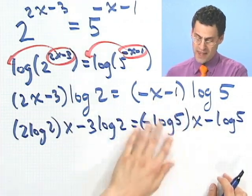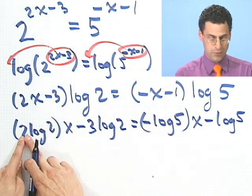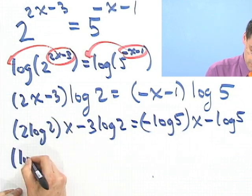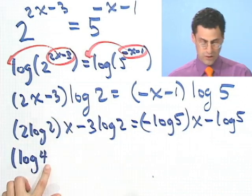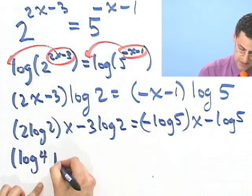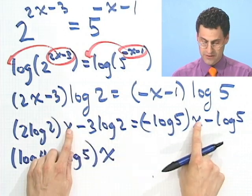What can I do now? Well, I can bring this stuff with x's over to this side, so it becomes a plus. This 2 out in front, I can pull that up and make it a log 2 squared, so I'll just write log to the 4, log of 4, log of 4, because that's 2 squared. I bring this over, it becomes a plus log 5, and that's all times x. I factored out the x.